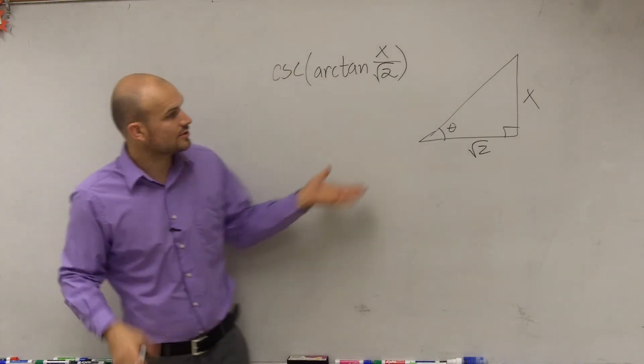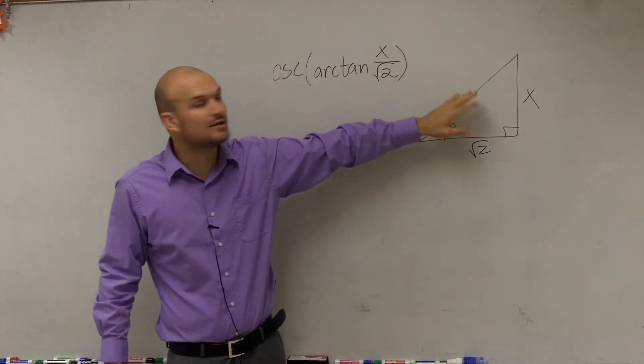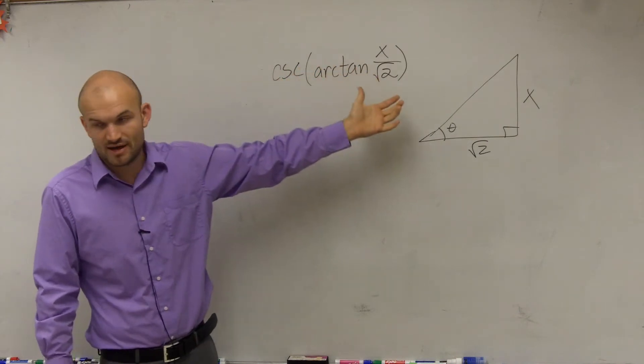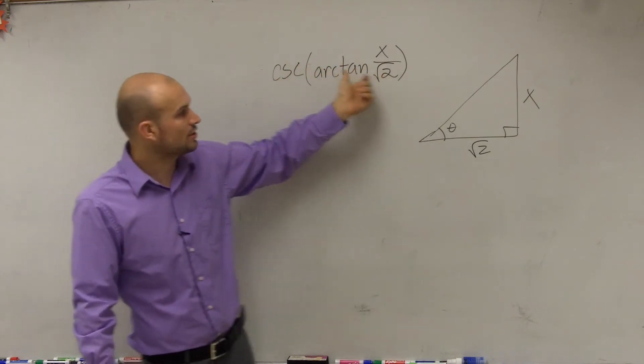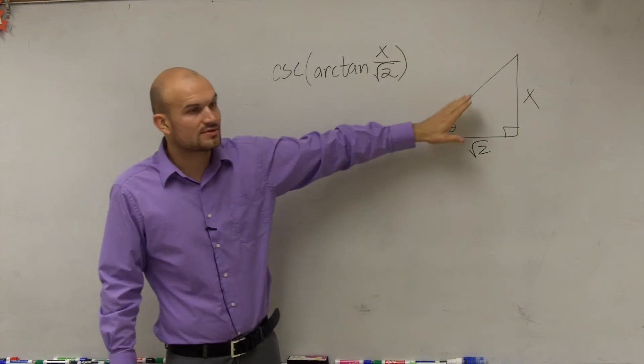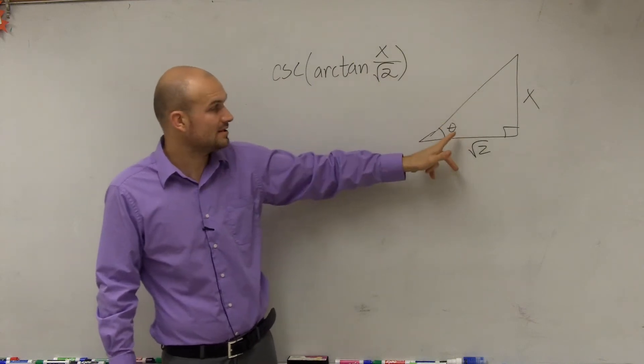Now, the next thing I want to do is I need to evaluate for my hypotenuse because they're asking us to find the cosecant of that function, or the cosecant of this value. So to find the cosecant with our theta right here,